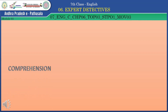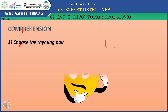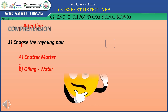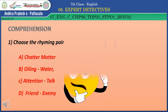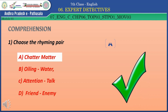Now let's move on to the comprehension. Question 1: Choose the rhyming pair. Option A: Chatter, matter. Option B: Oiling, water. Option C: Attention, talk. Option D: Friend, enemy. The correct answer is Option A — chatter, matter.